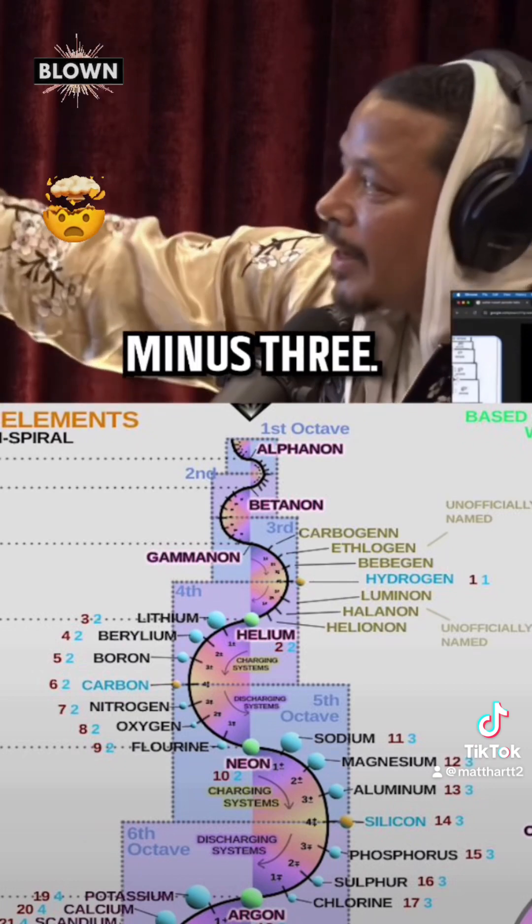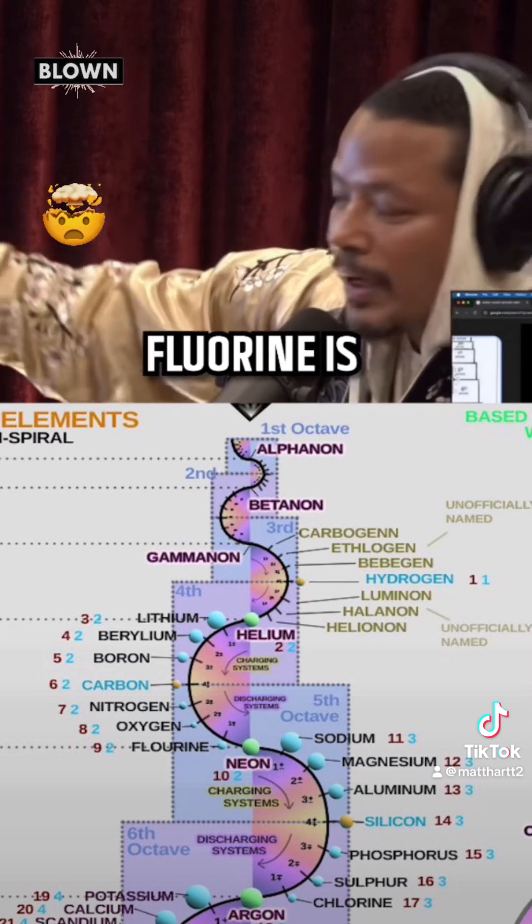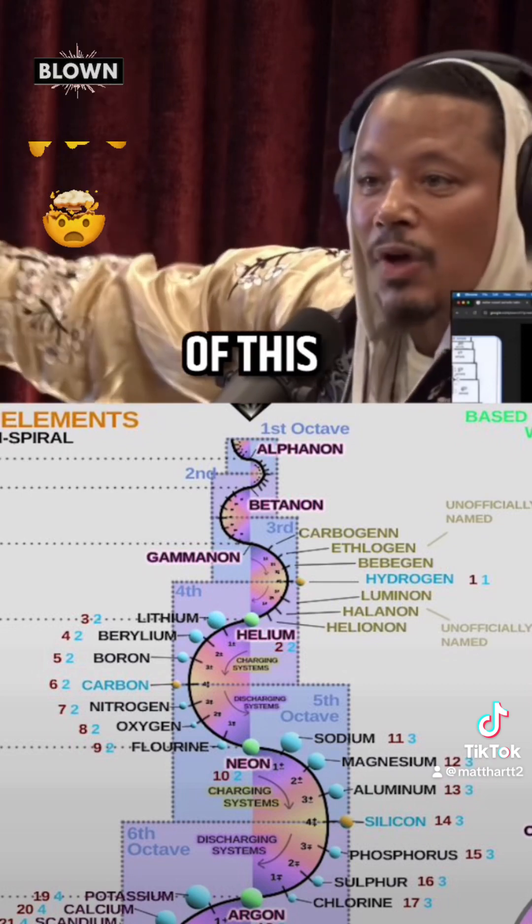Nitrogen is minus three. Oxygen is minus two. Fluorine is minus one. Now the balance of this, all of those are mates.